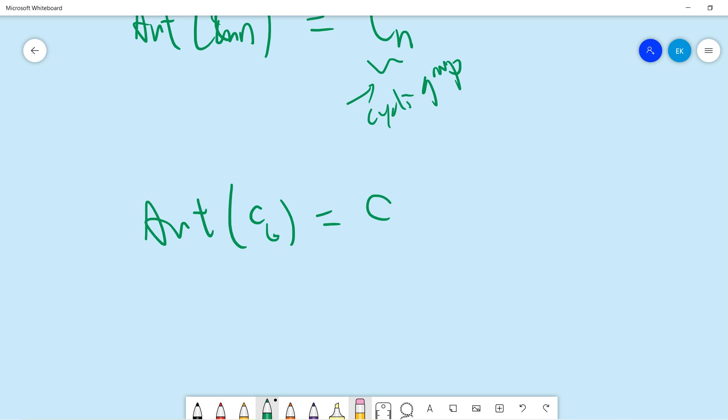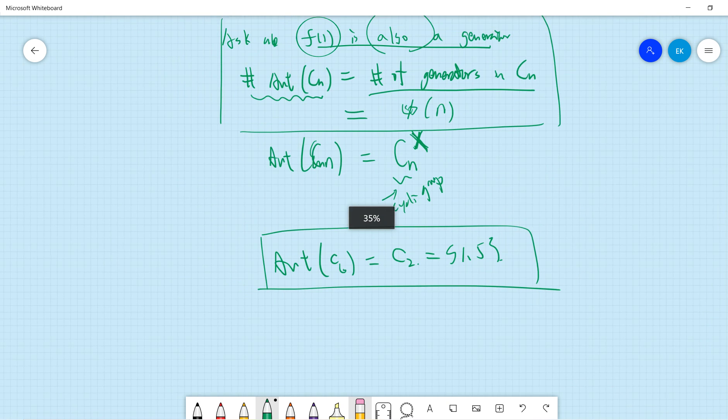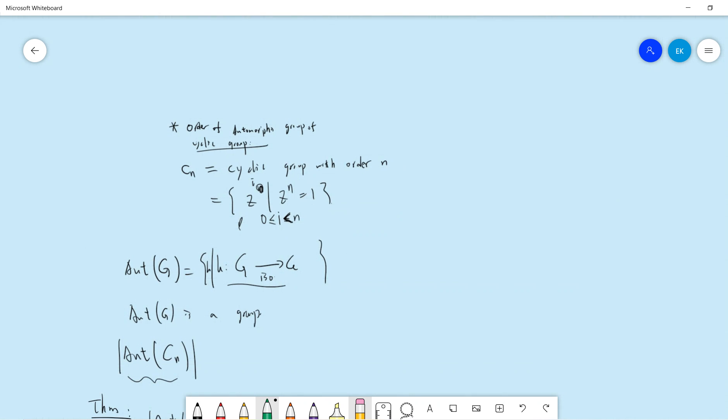For example, the automorphism of C6 is basically C2, because it only contains elements one and five. That's it, and I'll see you guys in another algebra or group theory video. Thanks.